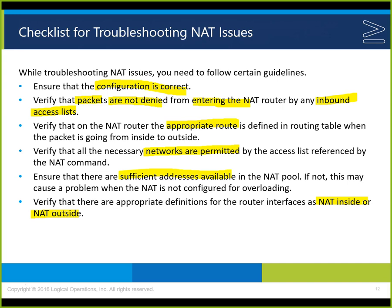Ensure that sufficient addresses are available in the NAT pool. If they're not, we can go into PAT with the overload command even with dynamic NAT. If we run out of dynamic addresses with overload configured, it will use the IP address of the outgoing interface — that's what PAT uses: the IP address of the interface we're NATing through.